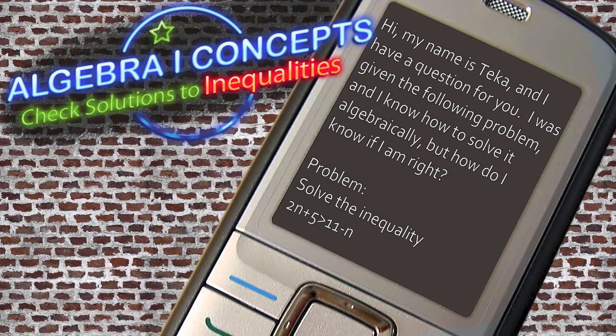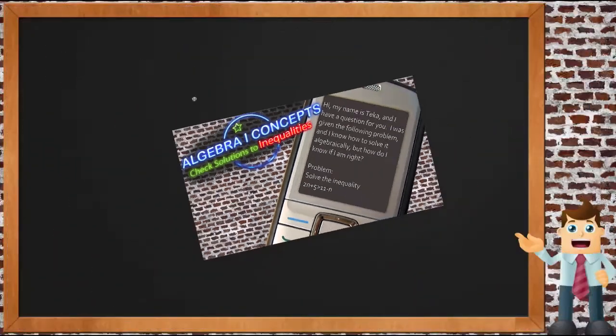Tika would like to know how does she check the answer to an inequality that she's solved? So it sounds like what you're asking is how do you know if the answer you've gotten for an inequality is correct? And it looks like you have a specific inequality that you've worked on, so let's write that down. We have 2n plus 5 is greater than 11 minus n.